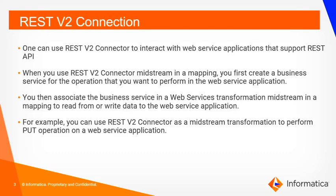In this specific video, we will be focusing on how you can use REST V2 connection as midstream. When you want to use REST V2 connector as midstream in a mapping, you will have to first create a business service for the operation that you want to perform in the web service application. You can then associate the business service in a web service transformation midstream in a mapping to read from or write data to the web service application. For example, you can use REST V2 connector as a midstream transformation to perform a PUT operation on a web service application.